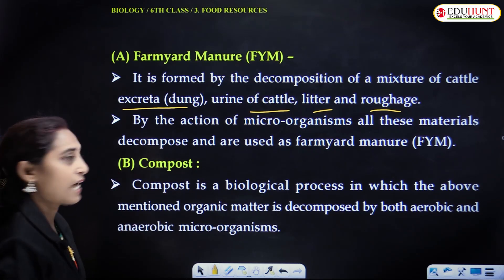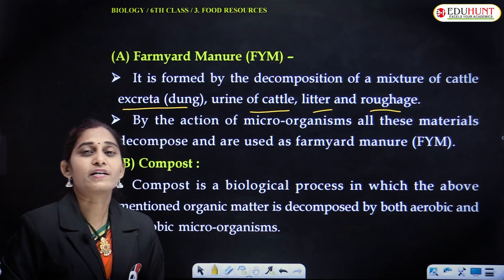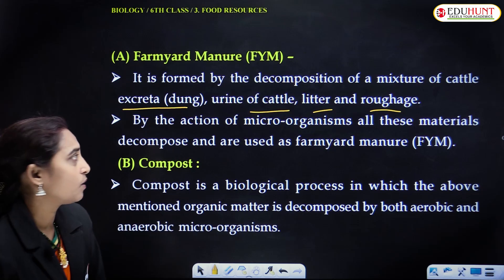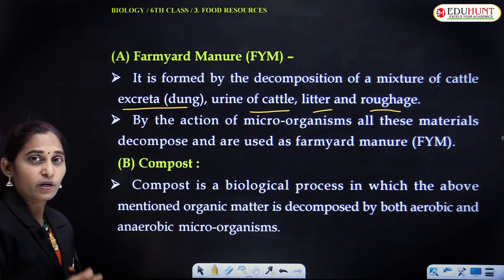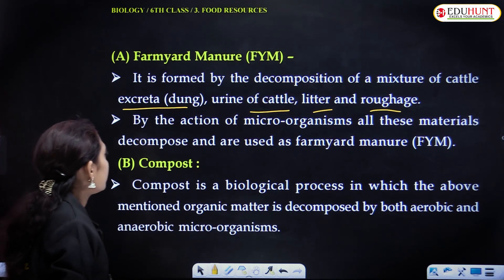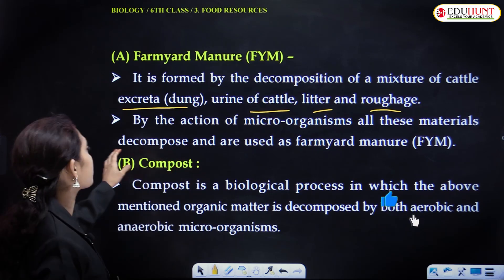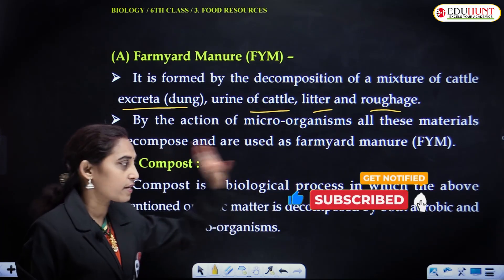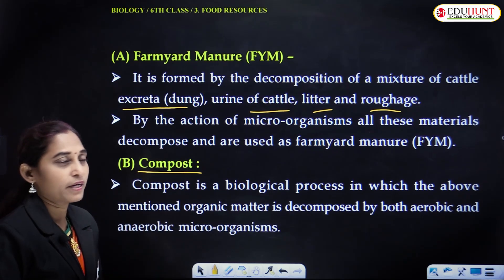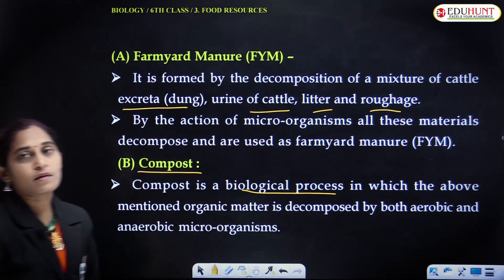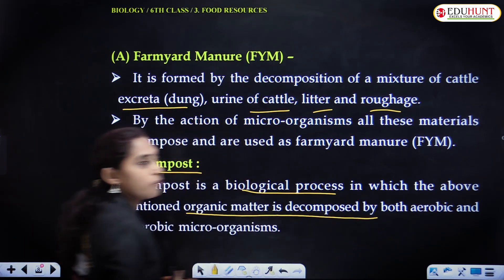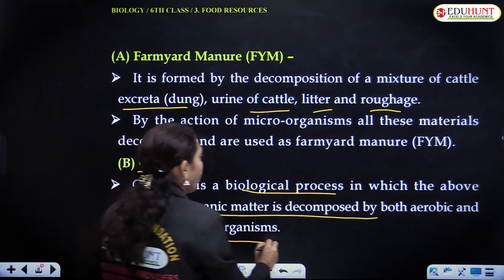The cattle waste and even plant waste, after decomposition, convert into a simpler, more nutrient-rich substance called farmyard manure. By the action of microorganisms, all these materials are decomposed and used as farmyard manure. The second type is compost — it is also a kind of manure, formed by a biological process in which organic matter is decomposed by both aerobic and anaerobic microorganisms.